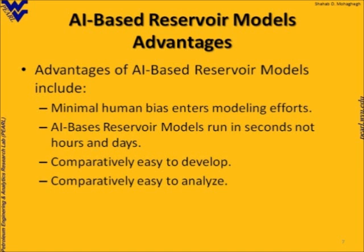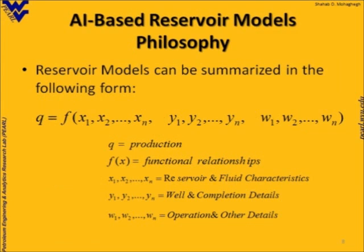What is the philosophy behind it? In reservoir simulation and modeling, what we do is try to get production as a function of several sets of parameters: X — reservoir and fluid characteristics; Y — well completion, design, and details; and Z — operational details, surface facilities, and so on. We know a lot about the well and operational constraints with very little uncertainty. Therefore, when we do our modeling and history matching, we try to change the Xs — the reservoir characteristics and fluid interactions — in order to achieve the outputs we see from the reservoir. We call that process history matching.